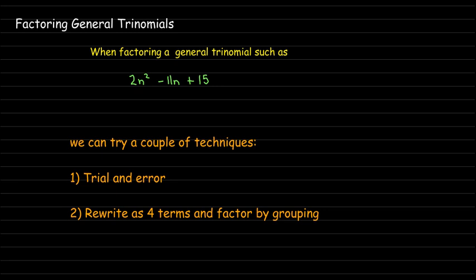There are a couple of techniques that can be used. One is just trial and error, and there are many different techniques for performing the trial and error — some with really interesting names, like 'bottoms up' and others. If you understand those methods, please use them. Then there's another method more related to simple trinomial factoring, but you have to do some number work and then factoring by grouping — rewriting it as four terms and then using factoring by grouping.